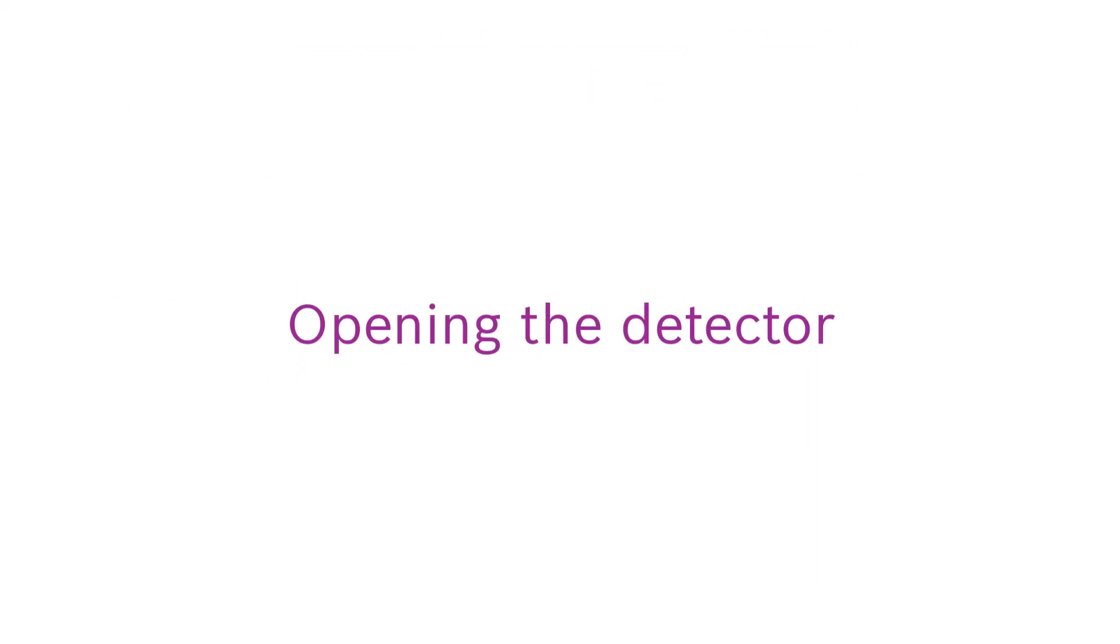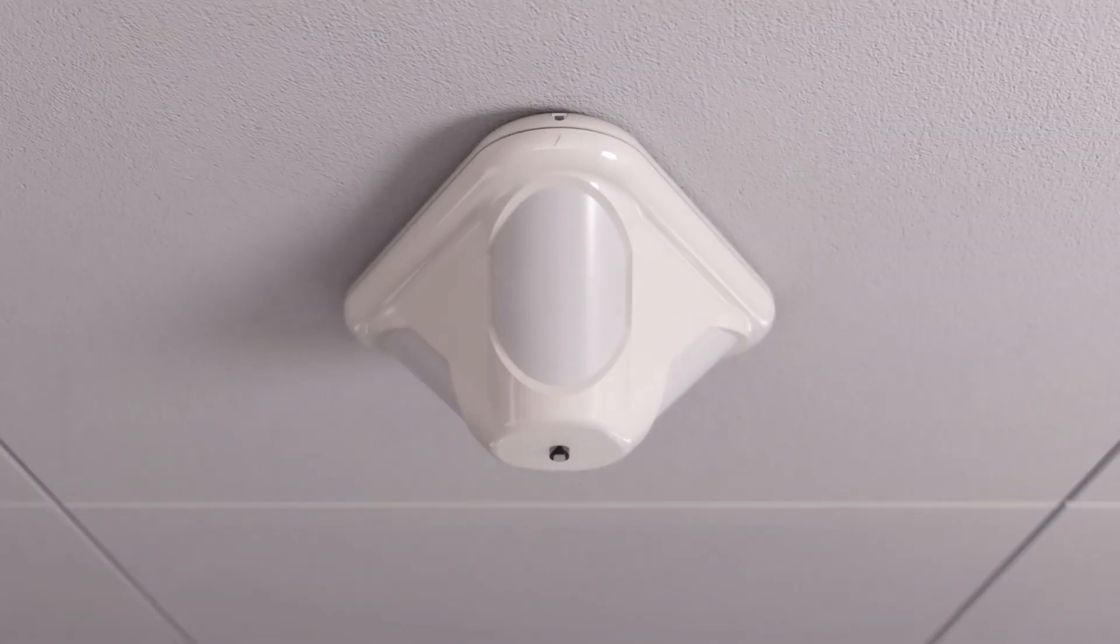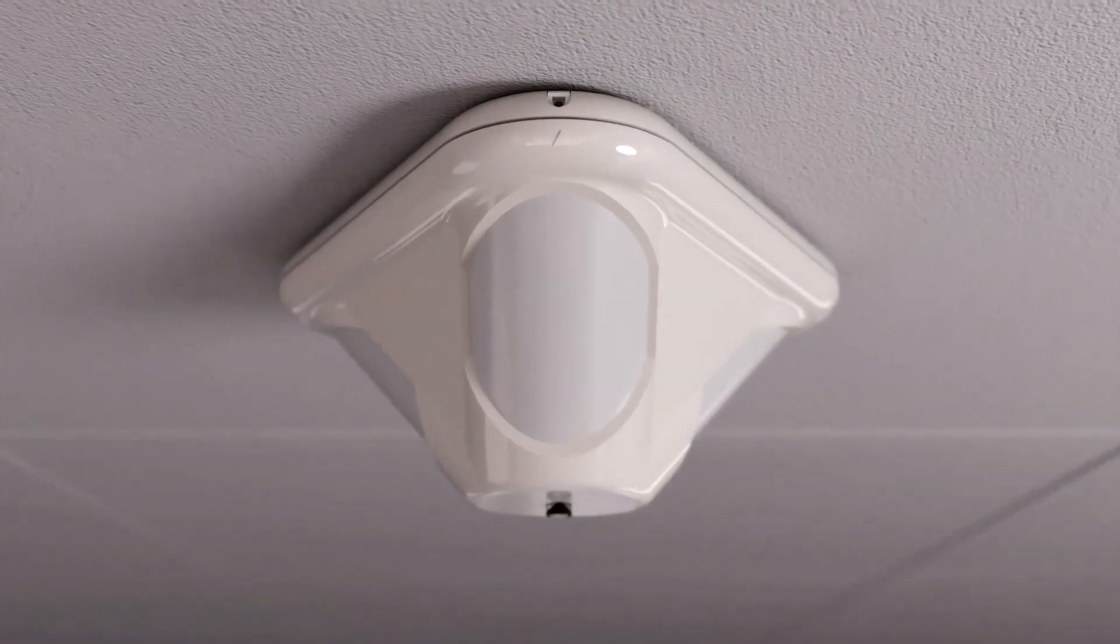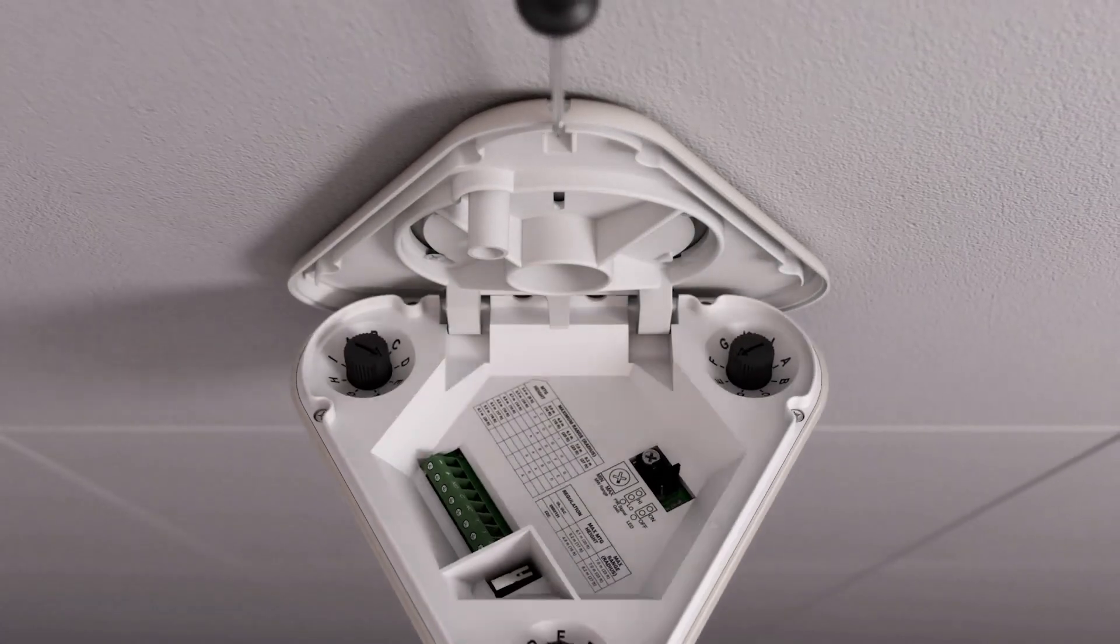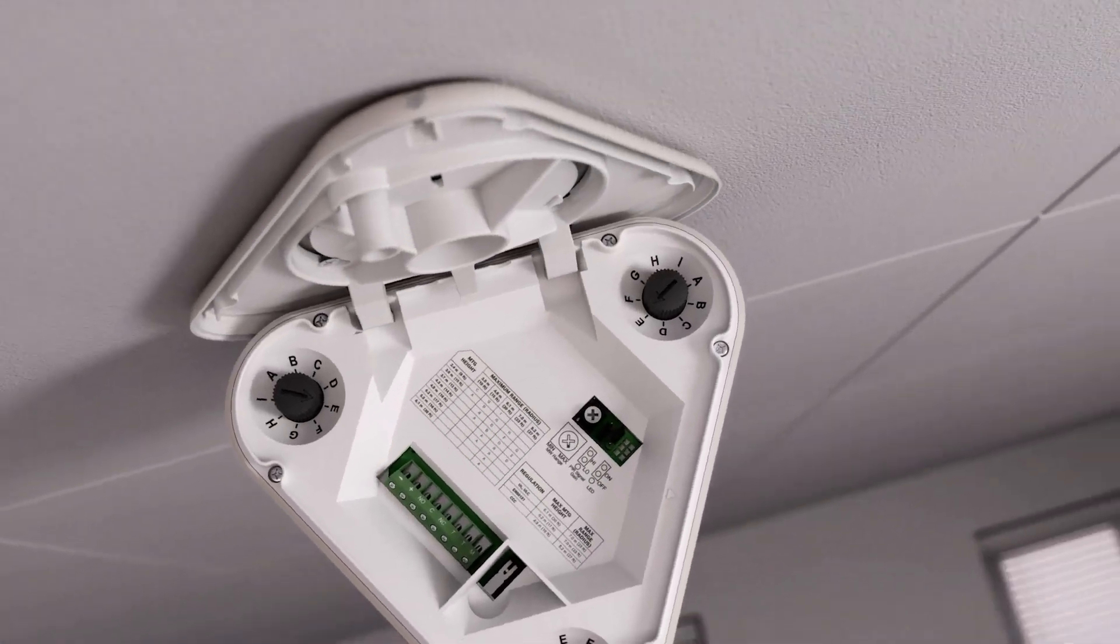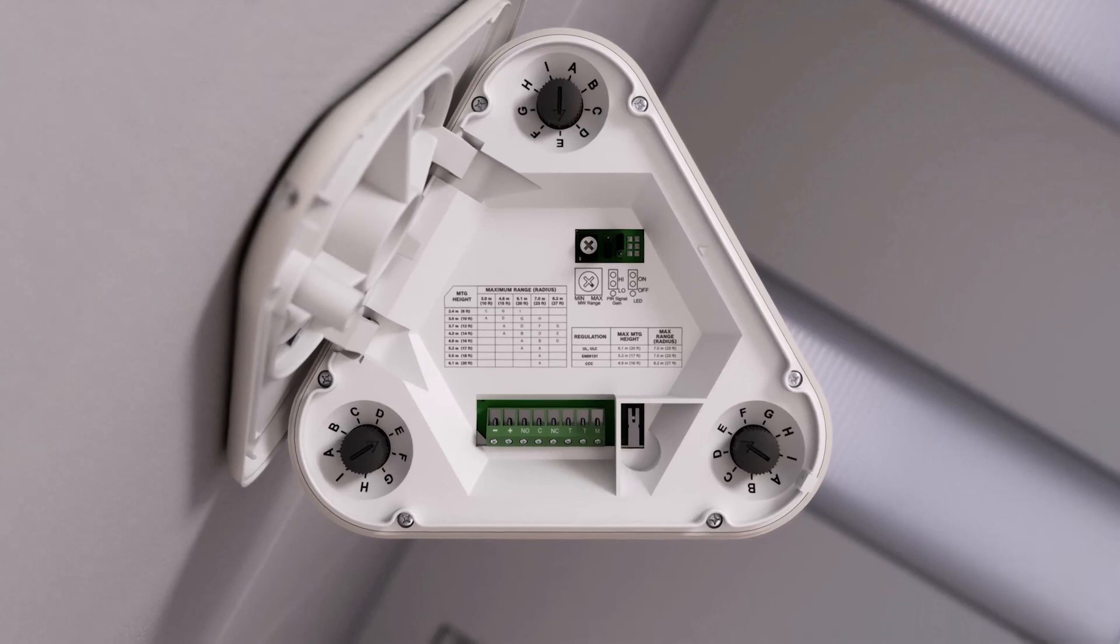Opening the Detector. To open the detector, locate the arrow on the cover. Insert a flat-head screwdriver in the recess between the cover and the base. Twist the screwdriver and the detector will open. One side of the cover remains attached to the base of the detector. This hinged cover keeps your hands free for wiring and configuration.